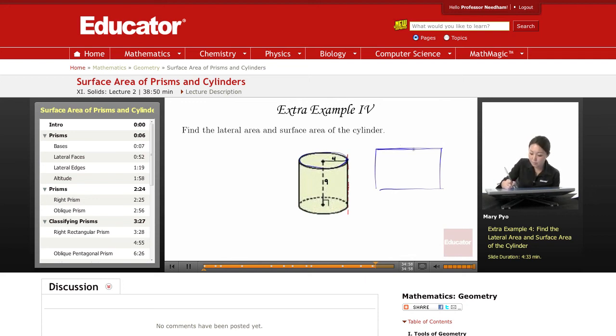So it's 2 pi r, and this is the height which is 9. So 2 pi r: 2 times pi times the radius which is 4, that's the length, the width is 9.